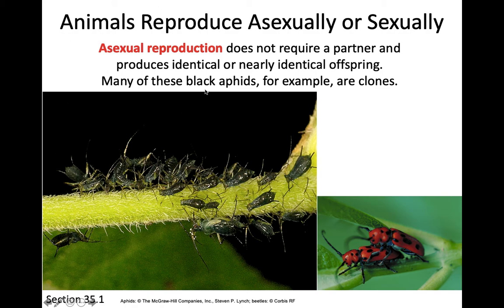Asexual reproduction is literally what that word means — the prefix 'a' means without, so reproduction without sex. These types of organisms, like aphids, essentially just clone themselves. They make a little copy of themselves, split in half, make an identical little copy. They lay little fertilized eggs that just instantly develop. They're genetically identical to one another.